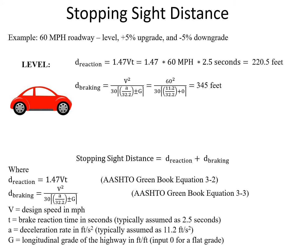Next we look at our braking distance. This is V squared over 30 times a, which is assumed to be 11.2 feet per second squared, divided by 32.2 plus or minus the grade. There's no grade in this case, so it's zero — giving us 60 squared over 30 times 11.2 divided by 32.2, for a braking distance of 345 feet.